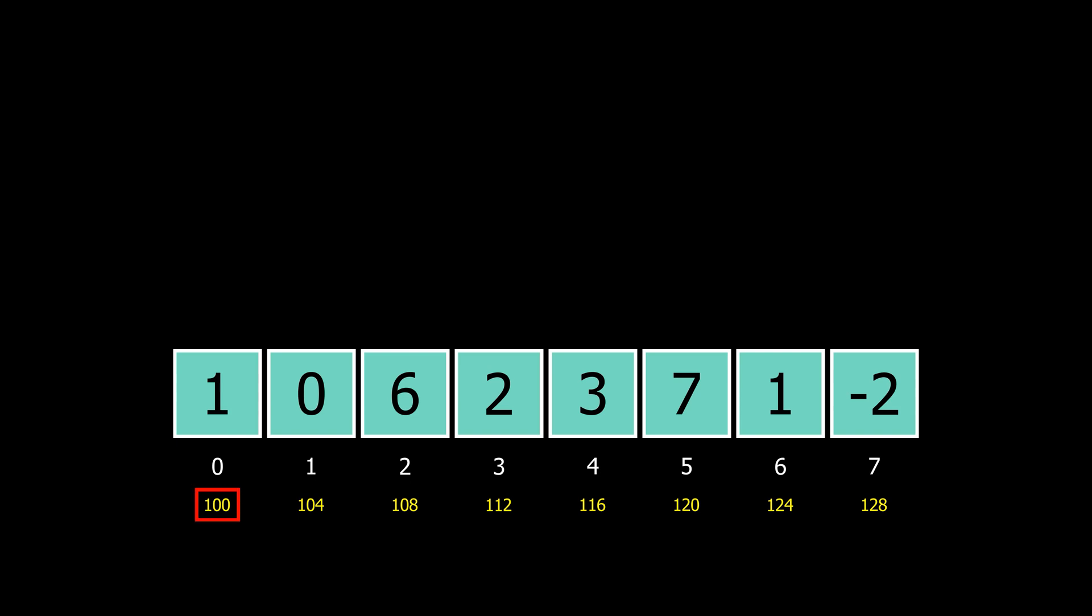Now the first memory address of the array is known as the base address. In this example it's 100, and the gap between the memory addresses is 4 units, which means that each element takes 4 units of memory. Also, each element of the array should be of the same size and data type.